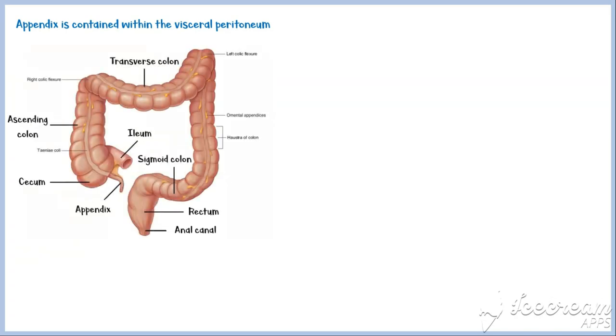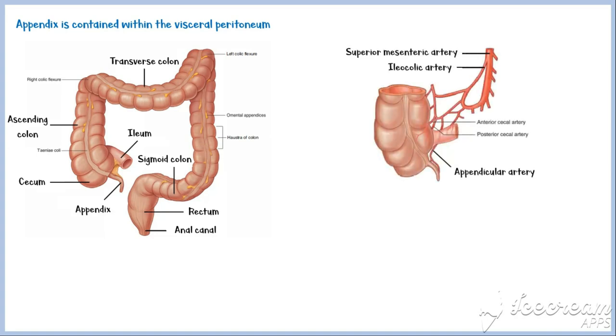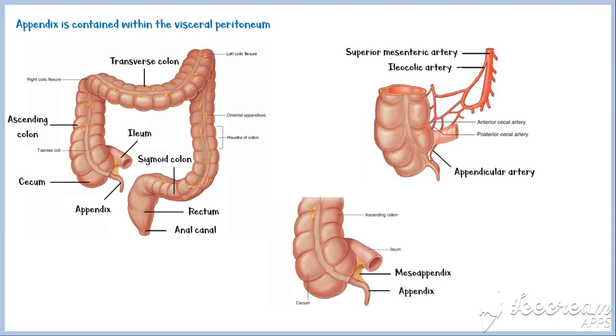Before we begin our discussion on appendicitis itself, we may recall the normal anatomy of the appendix. The appendix is contained within the visceral peritoneum. It is a worm-like extension of the cecum, so-called vermiform appendix. It is supplied by the appendicular artery, which is a branch of the ileocolic artery that emerges from the superior mesenteric artery. The appendicular artery runs through a serosal sheet of the peritoneum, called the mesoappendix, to supply the appendix.